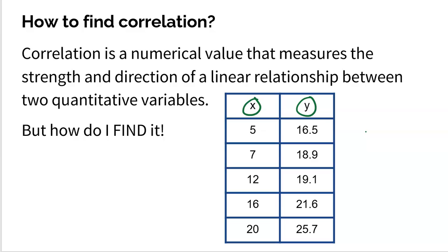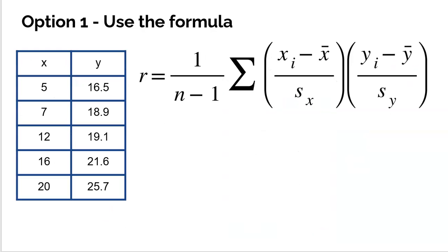Alright, so how do I find the correlation between these variables? Well, option one, use the formula. Oh my goodness, is this ugly. What you'd have to do is you'd first have to find your average of all of your x's and the average of all of your y's, the standard deviation of all of your x's, the standard deviation of all your y's.